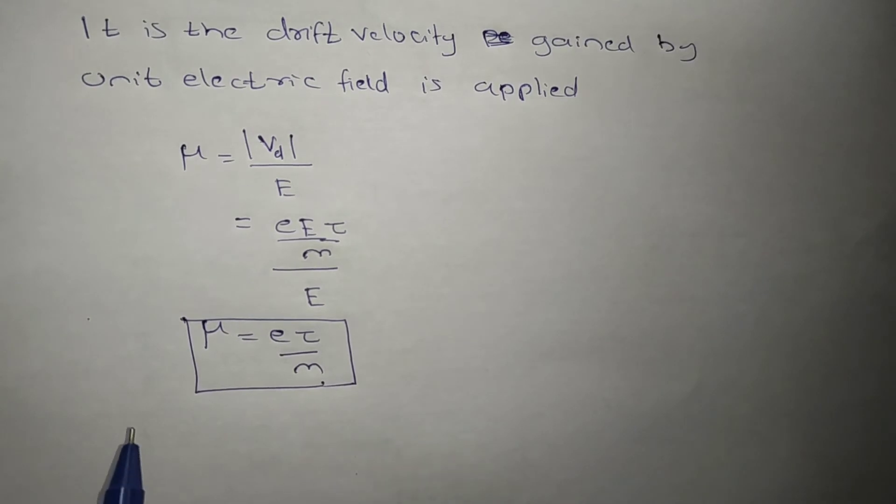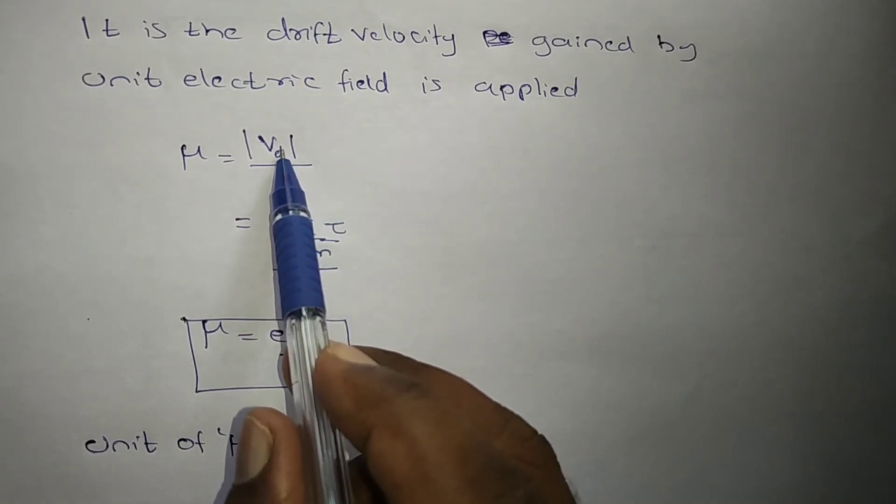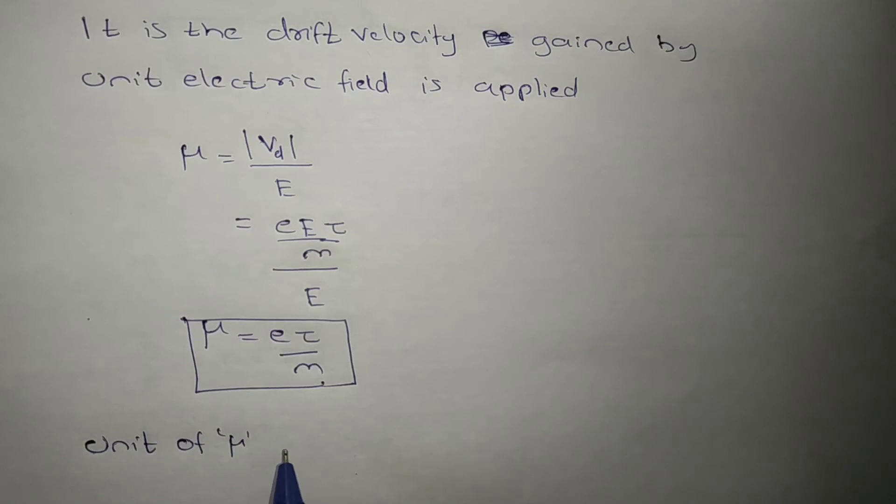Now we will see about the unit of μ. μ is equal to Vd divided by E. What is the Vd unit? Meter per second. What is the electric field unit? Volt per meter.